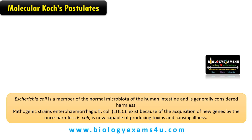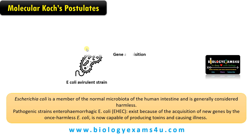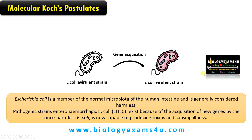Let's take an example to understand these postulates. E. coli, as we know, is a member of the normal microbiota of the human intestine and is generally considered harmless or avirulent, not causing disease. However, there are pathogenic strains like enterohemorrhagic E. coli, EHEC, which are formed as a result of gene acquisition from harmless strains.